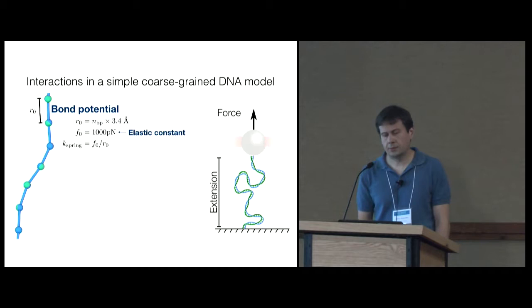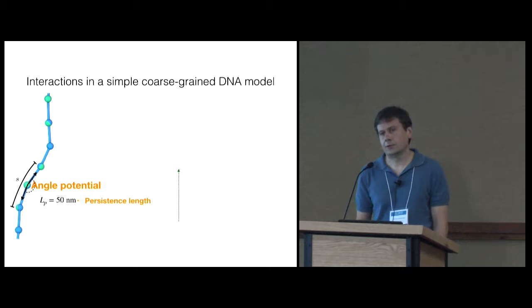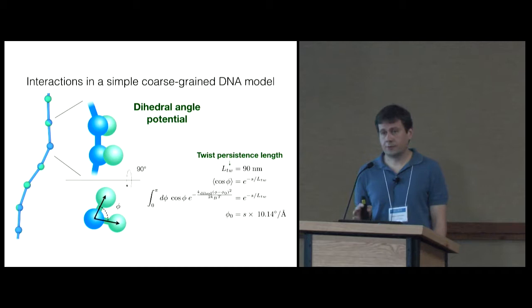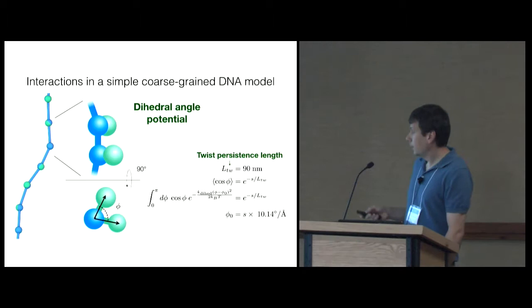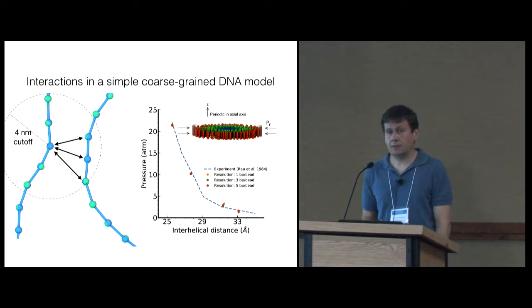Here's how we parameterize our model. It's a simple coarse grain model with beads on a string. We have a bond potential, which we calibrated against DNA extension measurements, which gave us elastic constant. We also have an angle potential, and here the angle potential is calibrated to reproduce the persistence length of DNA. We worry about twist in the DNA because one of the questions is, is DNA twisted when it's being packaged? So we also introduce this orientation beads to enable the torsion potentials, and our model captures twist-persistence length.